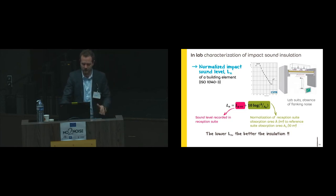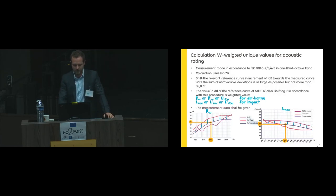How do you calculate this single value or global index? This is funny too. There's a standard called ISO 717. In fact, you have a reference curve here, and you shift this reference curve until the sum of the unfavorable deviation is as large as possible, but not more than 32 dB.